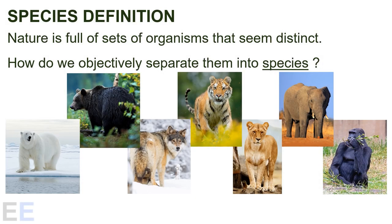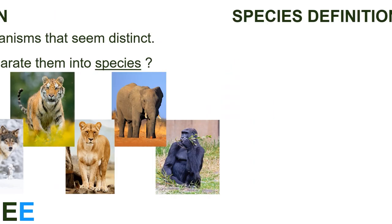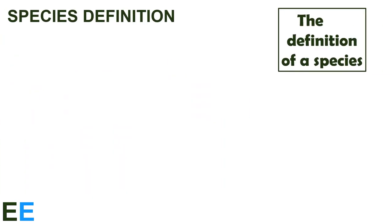Nature is full of sets of organisms that seem distinct. We look at all the animals and plants we see, and they seem to fall into different groups we call species. But how do we objectively separate them into these species? To make these separations, we need the definition of a species. What is a species, and what makes one species different from another?